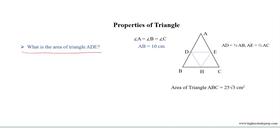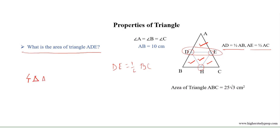What is the area of triangle ADE? Here AD equals half of AB, AE equals half of AC. If we join line DE, where DE equals half of BC, and join DH and EH, then we will have four triangles of equal area. The triangles are ADE, DEH, BDH, and HEC.